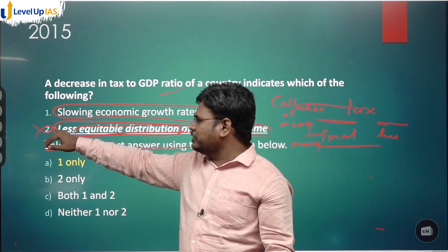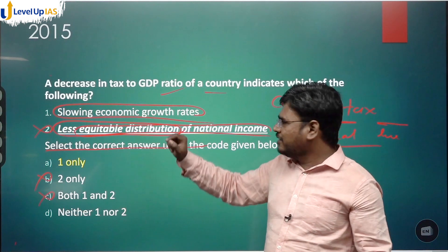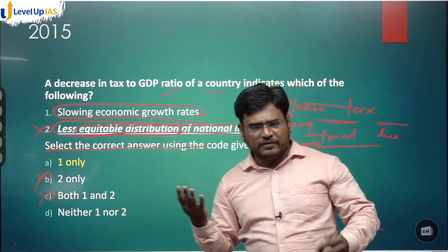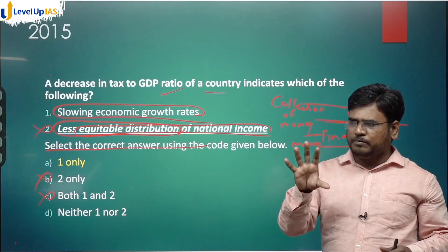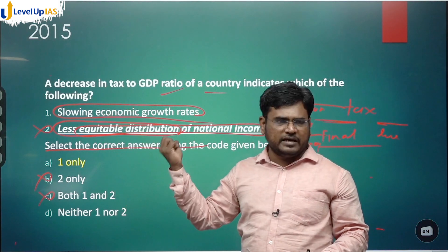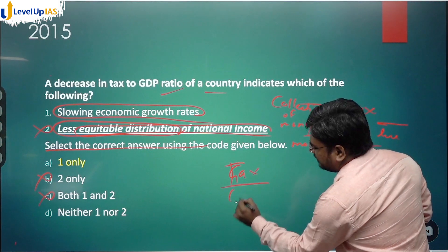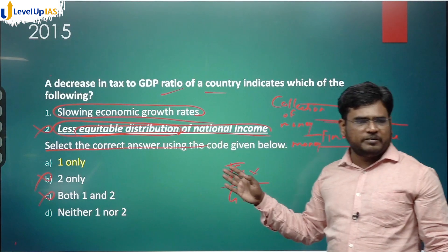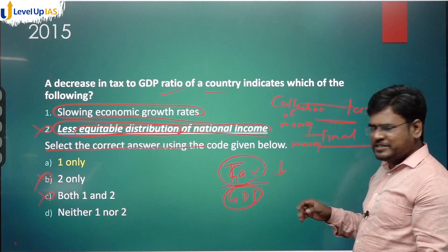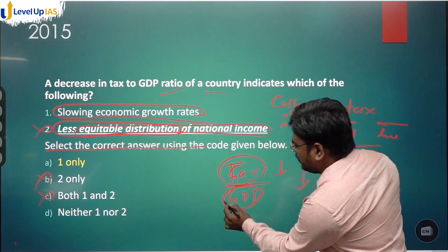We already eliminated statement two, so now let's look at statement one: slowing economic growth rate. Our first approach is your own knowledge; if you have it, solve directly. If not, use logic and common sense, and then the trick. Tax divided by GDP — if GDP growth is good, tax collection will be proportional and sufficient.